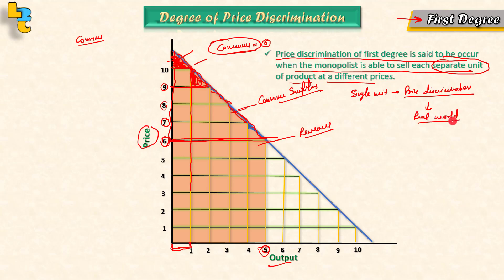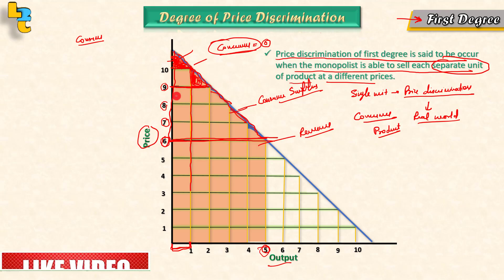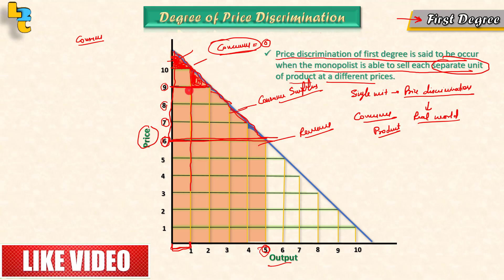This type of price discrimination is possible because our seller knows each consumer's willingness to pay. However, if consumers and products are not identifiable, price discrimination is not possible. This was our first degree price discrimination case.